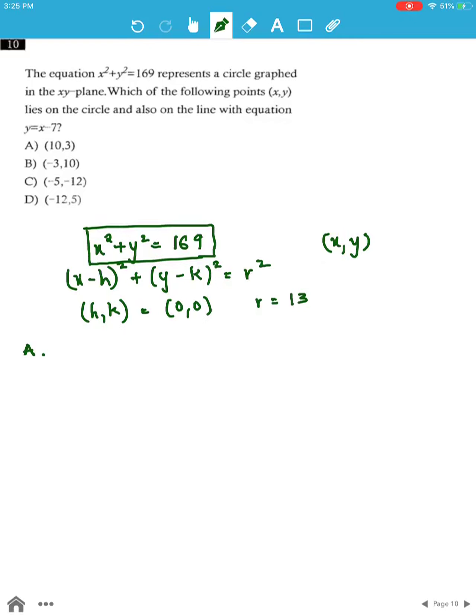In option A, when x is 10, y is 3. Substituting this into x squared plus y squared equals 169,